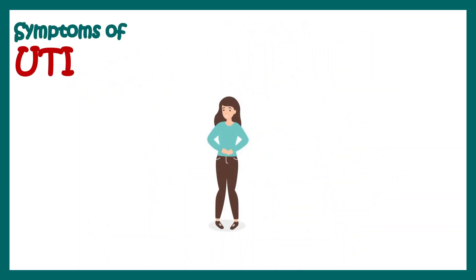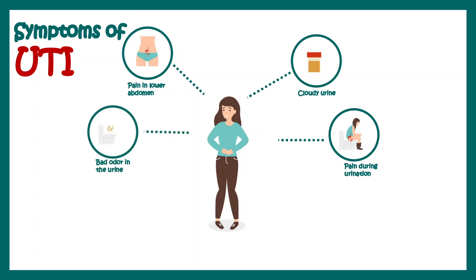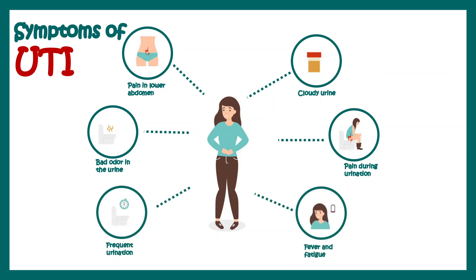Let's talk about the symptoms of UTI. It involves pain in the lower abdomen, pain during urination — dysuria — cloudy urine, and sometimes bad odors in the urine. There could be frequent urination, and sometimes fever and chills as well.